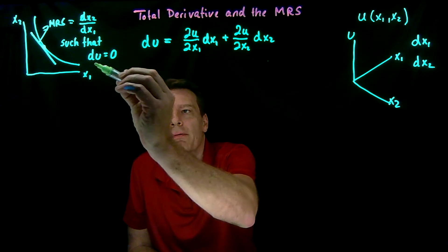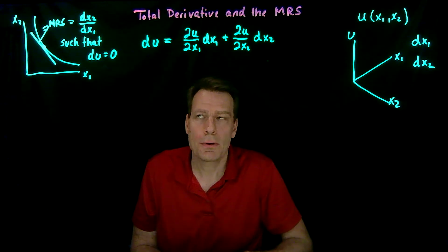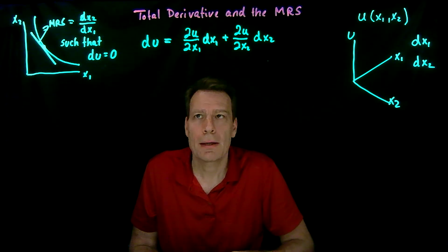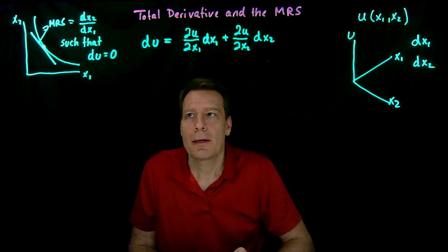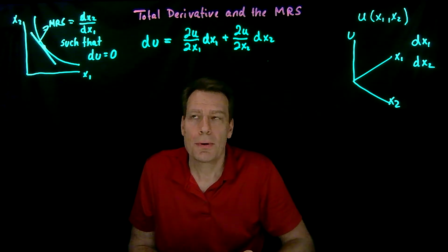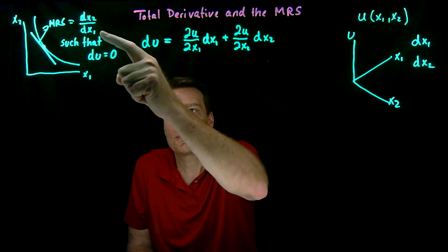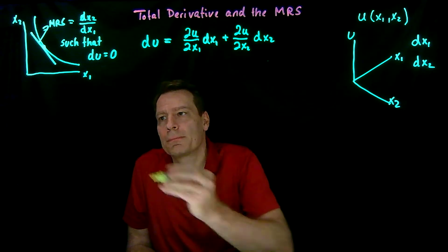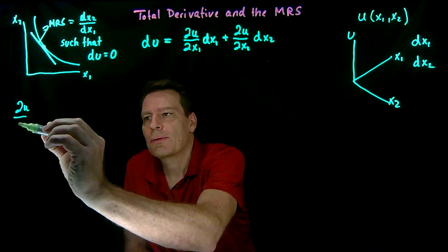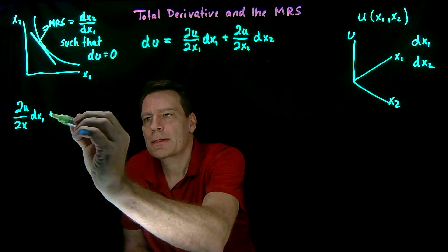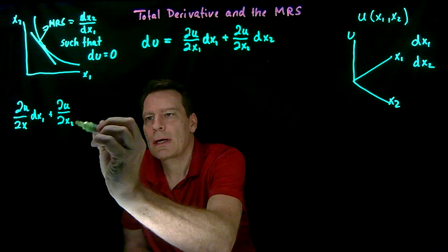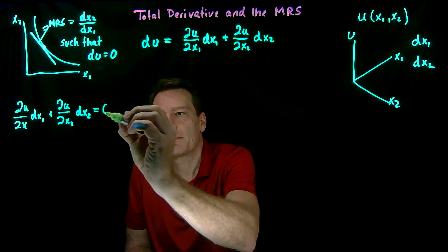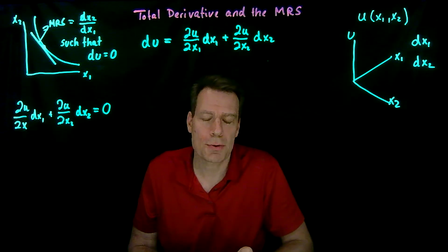So here we have a total derivative du that's equal to zero for the change in x2 over the change in x1 — that's the marginal rate of substitution. But we already know what du is. So by taking the total derivative expression and setting it equal to zero, we can find what change in x2 over change in x1 actually produces a du equal to zero. The partial of u with respect to x1 times dx1, plus the partial of u with respect to x2 times dx2 — that's just du — has to equal zero for the changes to correspond to a marginal rate of substitution.